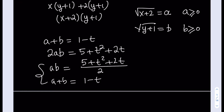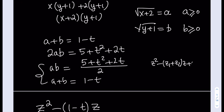The equation whose roots are a and b can be written using variable z: z squared minus (a plus b)z plus (a times b) equals 0. Substituting our values, we get the quadratic in z with sum (1 minus t) and product (5 plus t squared plus 2t) over 2. This might look complicated with both z and t, but what's critical is that we need real solutions.